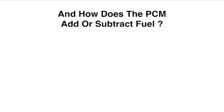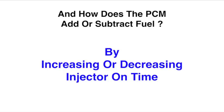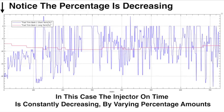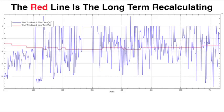And the graph changes every time the PCM adds or subtracts fuel. And how does the PCM add or subtract fuel? By increasing or decreasing the injector on time. Notice on the left side, you're going to see the percentage negative numbers. It's decreasing. So in this case, the injector on time is constantly decreasing by varying the percentage amounts.